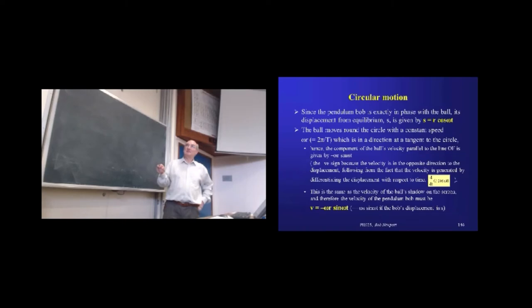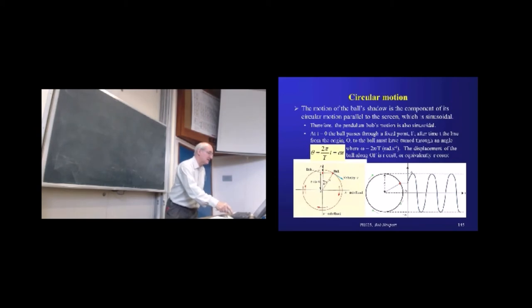So, the displacement of the pendulum bulb from its equilibrium position is also then given by r cosine θ. And θ, remember, again, skip back a slide, θ is ω t. We're measuring θ in radians, remember. This is all in radians per second if we're looking at ω. So, a complete circuit is 2π radians.